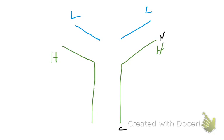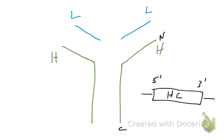Hopefully N and C terminus are concepts you remember from biochemistry — the amino terminus and the carboxy terminus of the protein, the beginning and the end. The way that relates to the gene: genes run from the five prime end to the three prime end — that's how they're read, five to three, N to C.